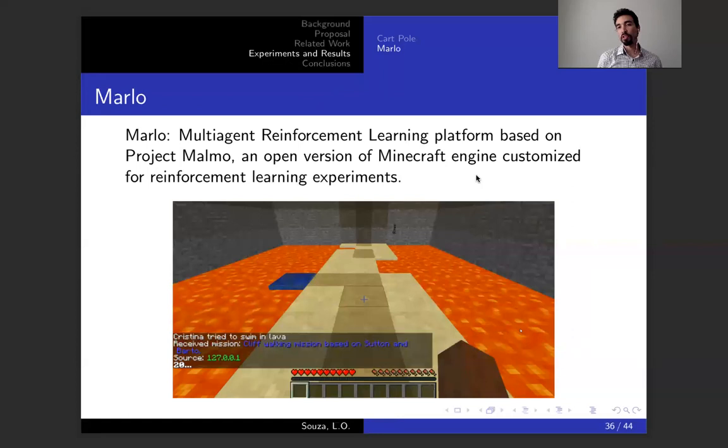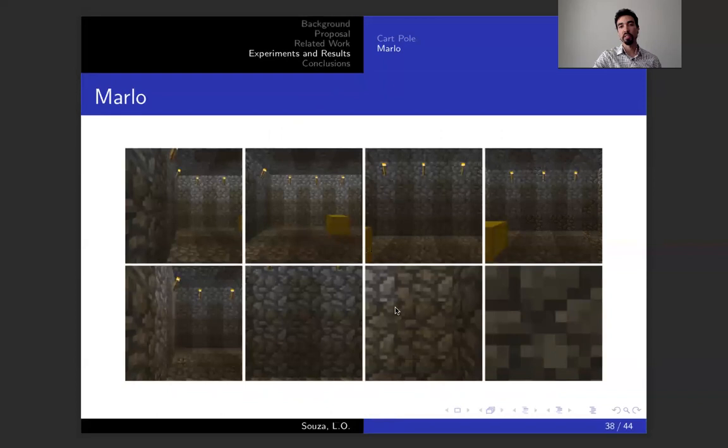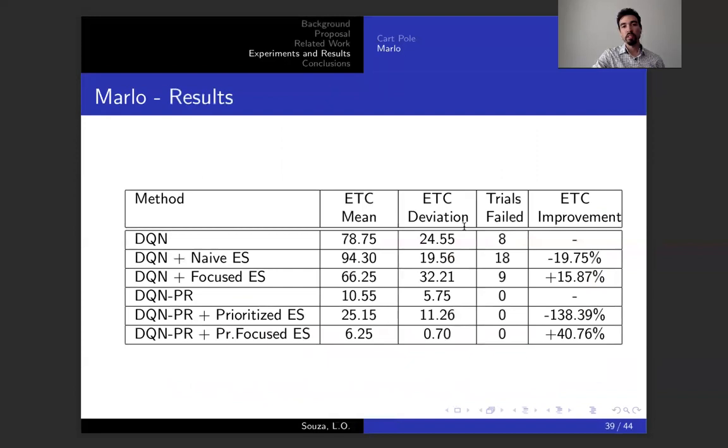We tried the same thing on Project Malmo, which is an open version of Minecraft engine, and it's customized for reinforcement learning experiments. The navigation problem here was to find a goal, so the agent is in a small room and has to see the goal. This image here is the state space. It's what the agent sees at any point in time, and the goal is finding the box. Regular DQN has a hard time solving this problem. It takes about 78 episodes. If you add naive experience sharing, it actually increases to 94, but if you add the focus aspect, you decrease from 78 to 66.